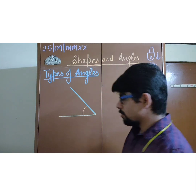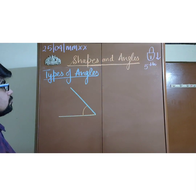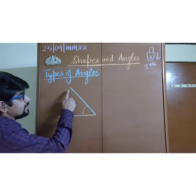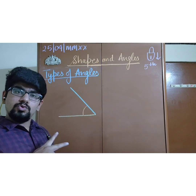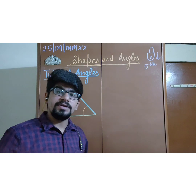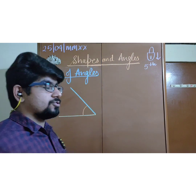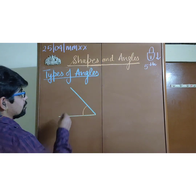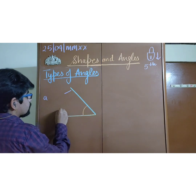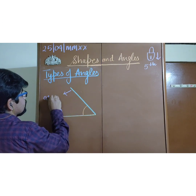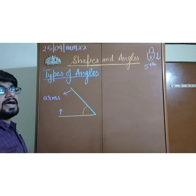Let us move to the parts of an angle. Here you can see a green line and a yellow line. These two lines which help in forming the angle are known as the arms of an angle.